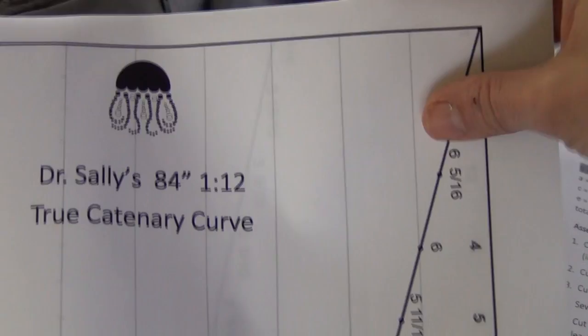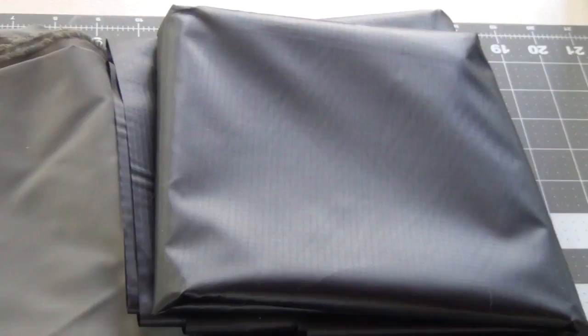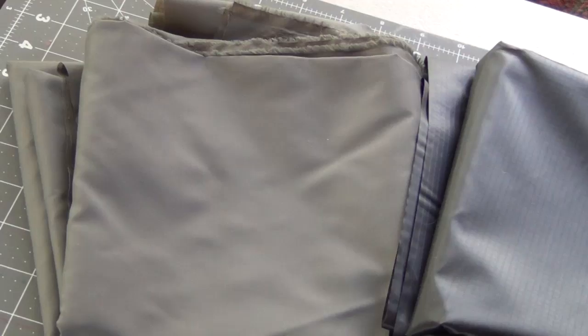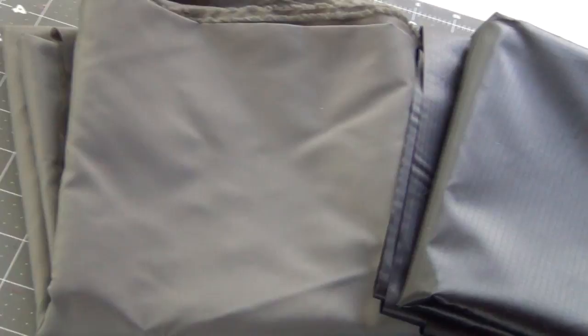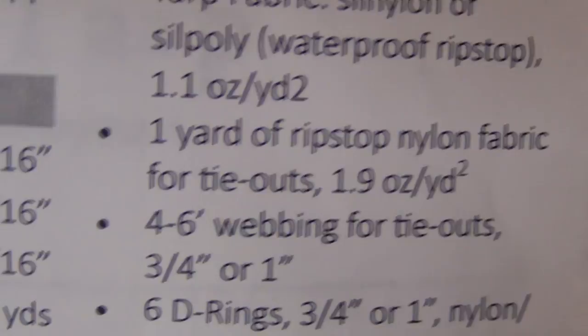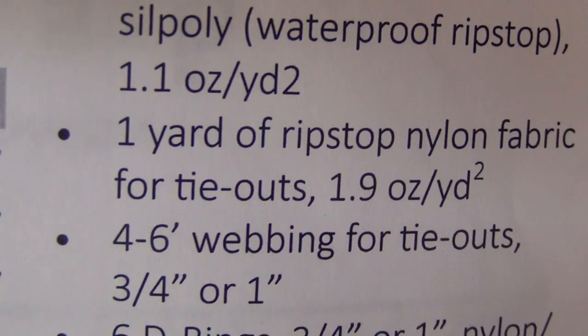So thank you Sally for making this template for us so that we can easily cut out and make catenary curves without a lot of measurements or elaborate spreadsheets. I'm going to make my tarp out of this black 1.1 ounce silk poly fabric from ripstop by the roll, and then my reinforcement triangles are going to be made out of this basic ripstop nylon. In his instructions Black Bishop says that you'll need a yard of that, and he recommends a 1.9 ounce per square yard nylon.